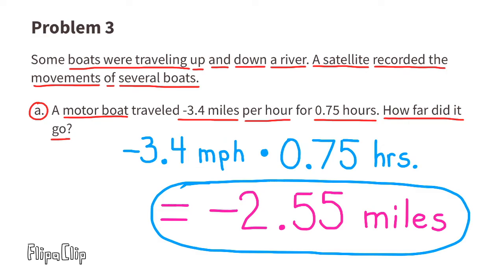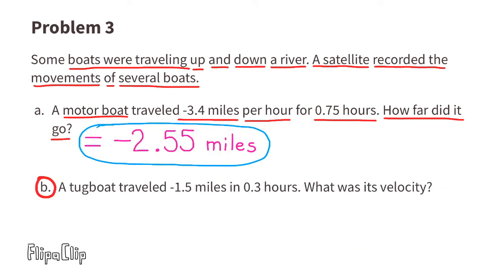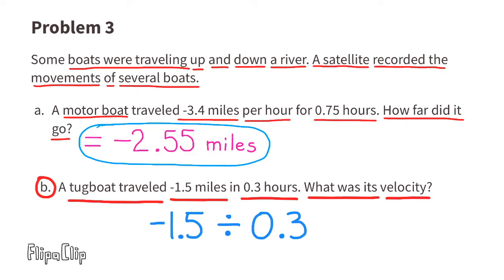Part b: A tugboat traveled negative 1.5 miles in 0.3 hours. What is its velocity? Negative 1.5 divided by 0.3, that equals negative 5. The velocity of the tugboat was negative 5 miles per hour.